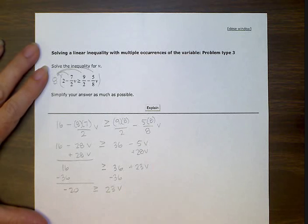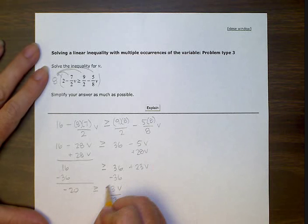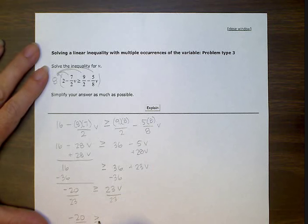Now that v is still not by itself. So it's being multiplied by 23, so we want to divide by 23 to get rid of it because 23 is the coefficient. So we're dividing by that number on both sides. So now we have negative 20 over 23 is greater than or equal to v, and that will be our answer.